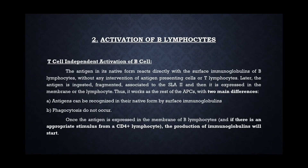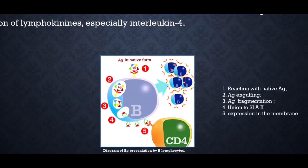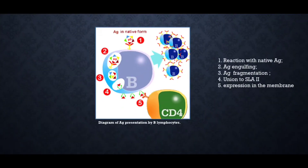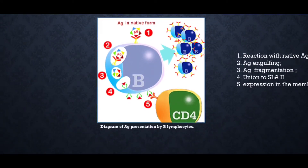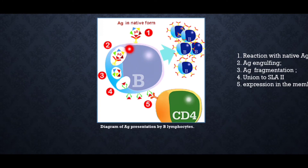Now, activation of B lymphocytes. Here we are discussing only about the T cell-independent activation. I will explain this in the diagrammatic representation. When a native form of antigen reacts with the surface immunoglobulins of B lymphocytes, the antigen is ingested and fragmented and associated to the SLA-2 markers, and then expressed to the membrane of the B lymphocyte.